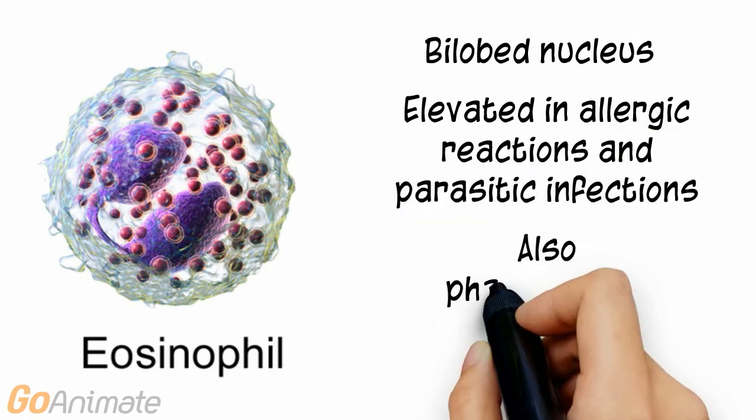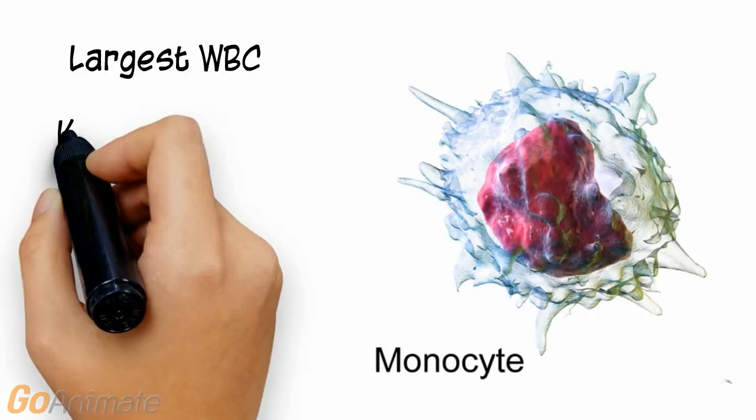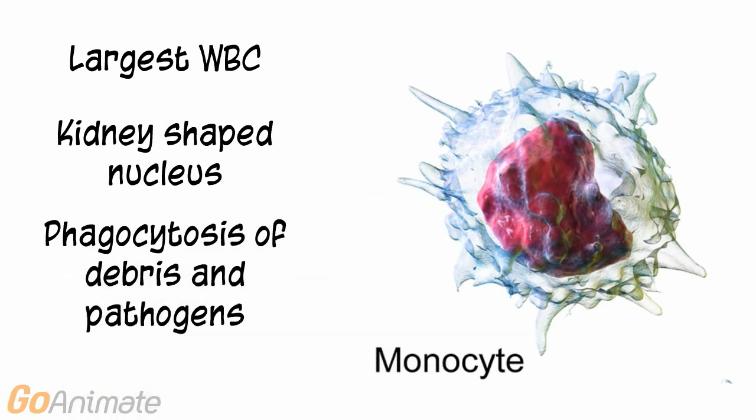Eosinophils have a bilobed nucleus. Eosinophils are elevated in allergic reactions and parasitic infections. They also perform phagocytosis of pathogens. The monocyte is the largest white blood cell and has a kidney-shaped nucleus. It performs phagocytosis of debris and pathogens.